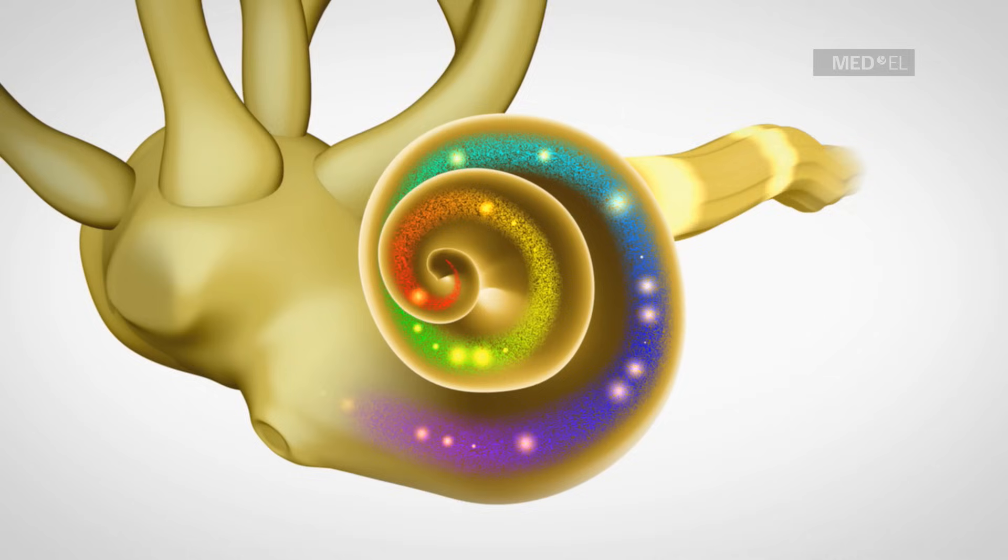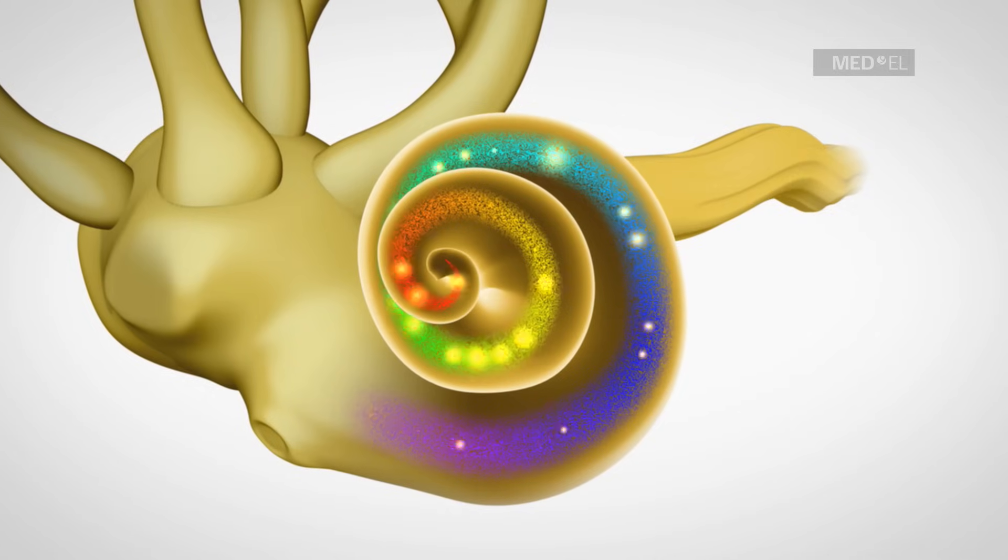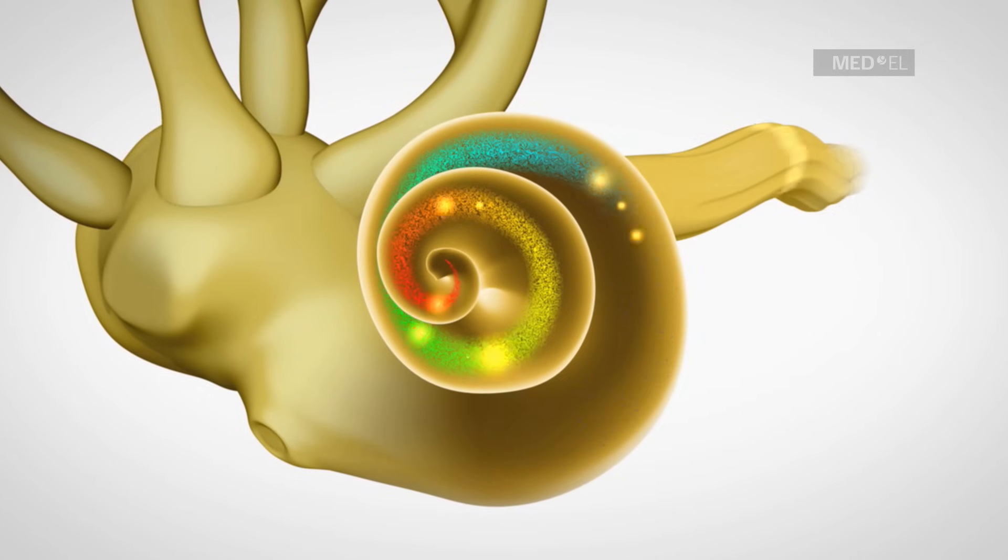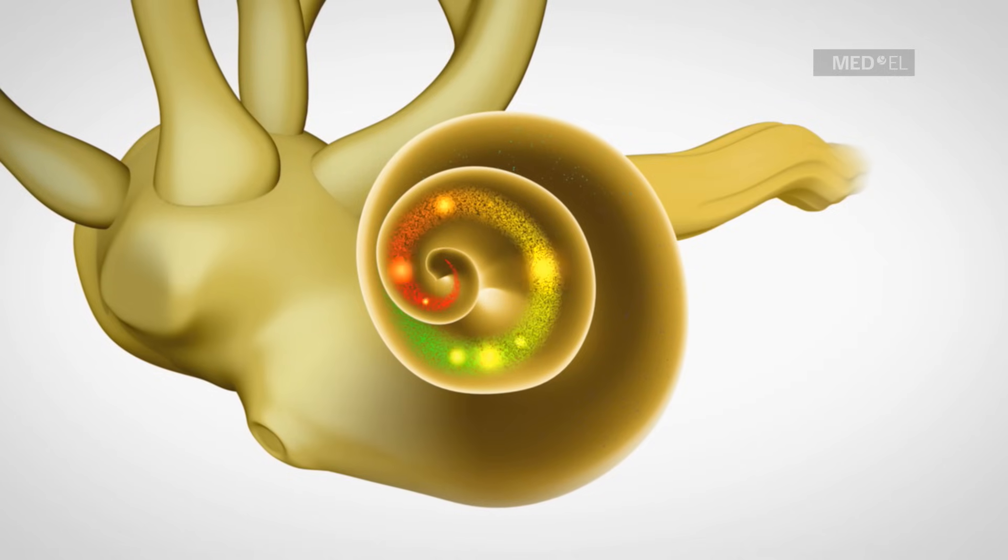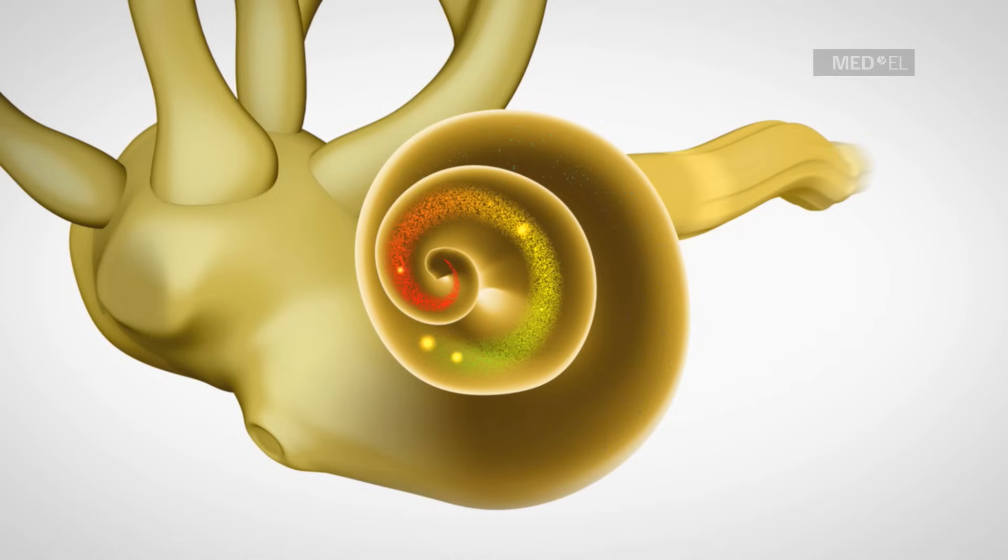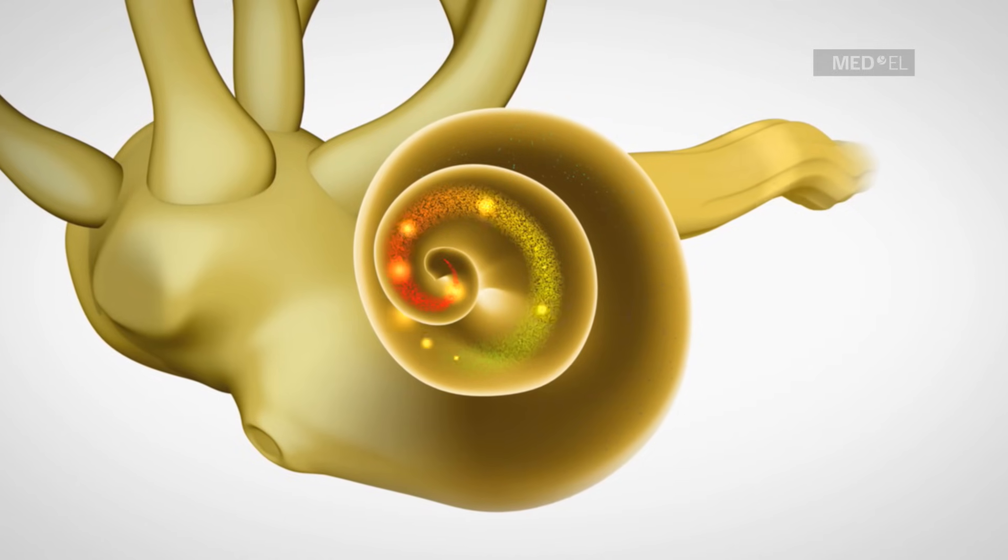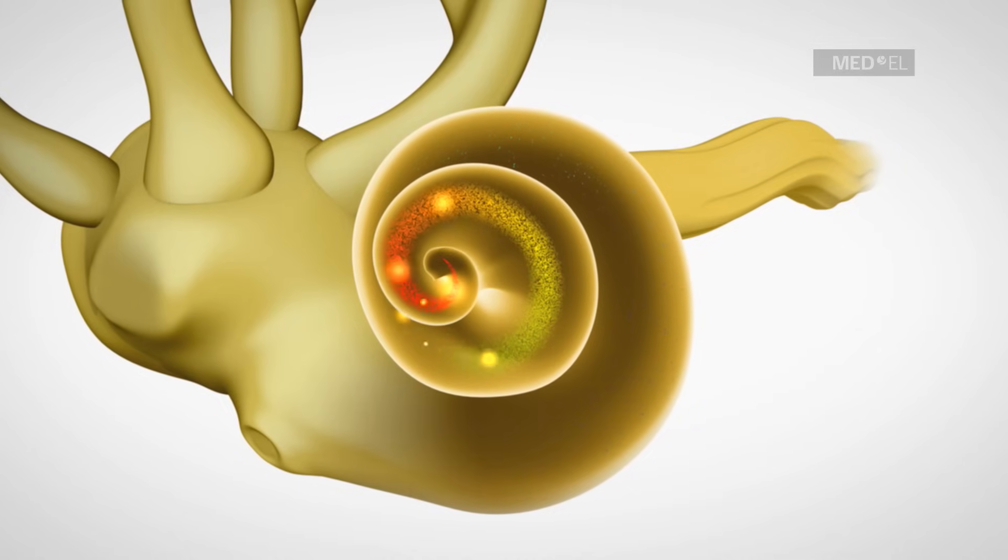Some individuals have a hearing loss only in the high frequencies, also referred to as partial deafness. In these cases, only the hair cells at the base of the cochlea are damaged. In the inner part of the cochlea, the apex, the hair cells which are responsible for processing the low tones are still intact.